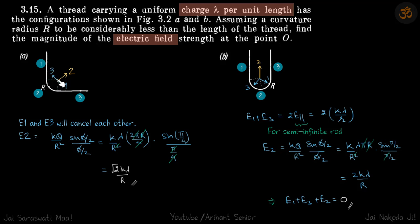Due to the first part, the field will be here making an angle of 45 degrees with this line. This we have seen before — why this happens. Now due to wire 3, the field will again be at 45 degrees with this line. The magnitudes are the same and directions are opposite, so E1 and E3 will cancel each other.